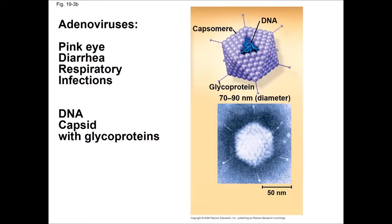Viral coats can also have carbohydrates on them. Adenoviruses, which are human pathogens that cause things like pink eye, diarrhea, and respiratory infections, have carbohydrate chains on the capsomere proteins of their capsid. Proteins with carbohydrate groups on them are called glycoproteins.